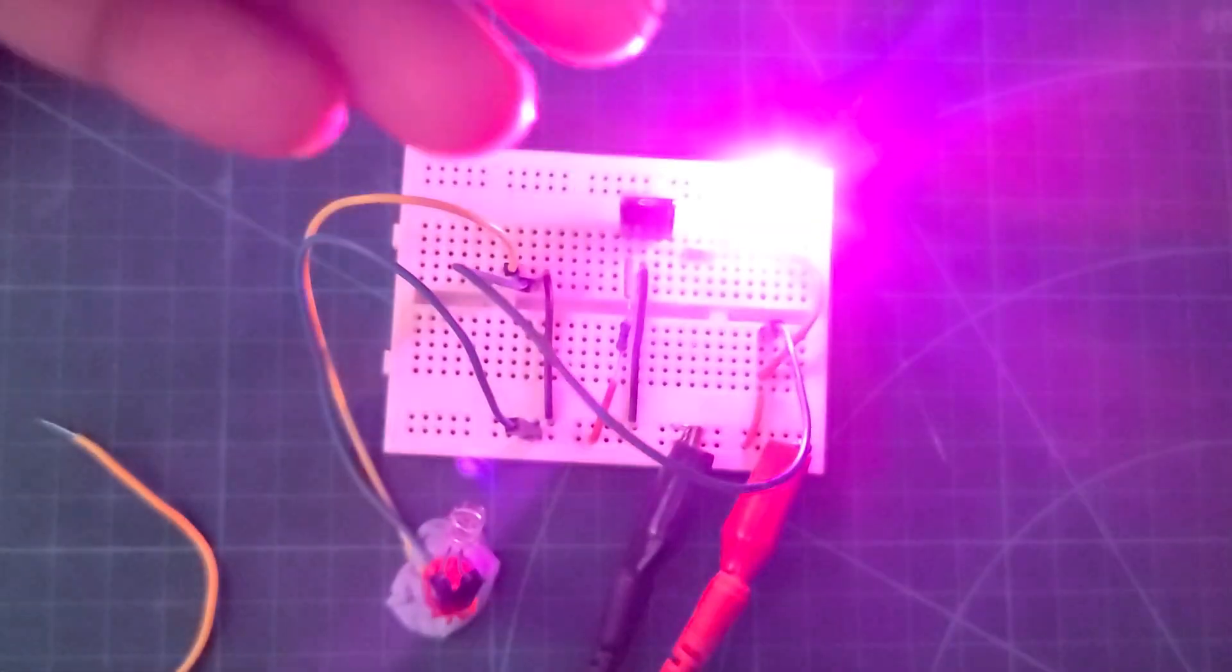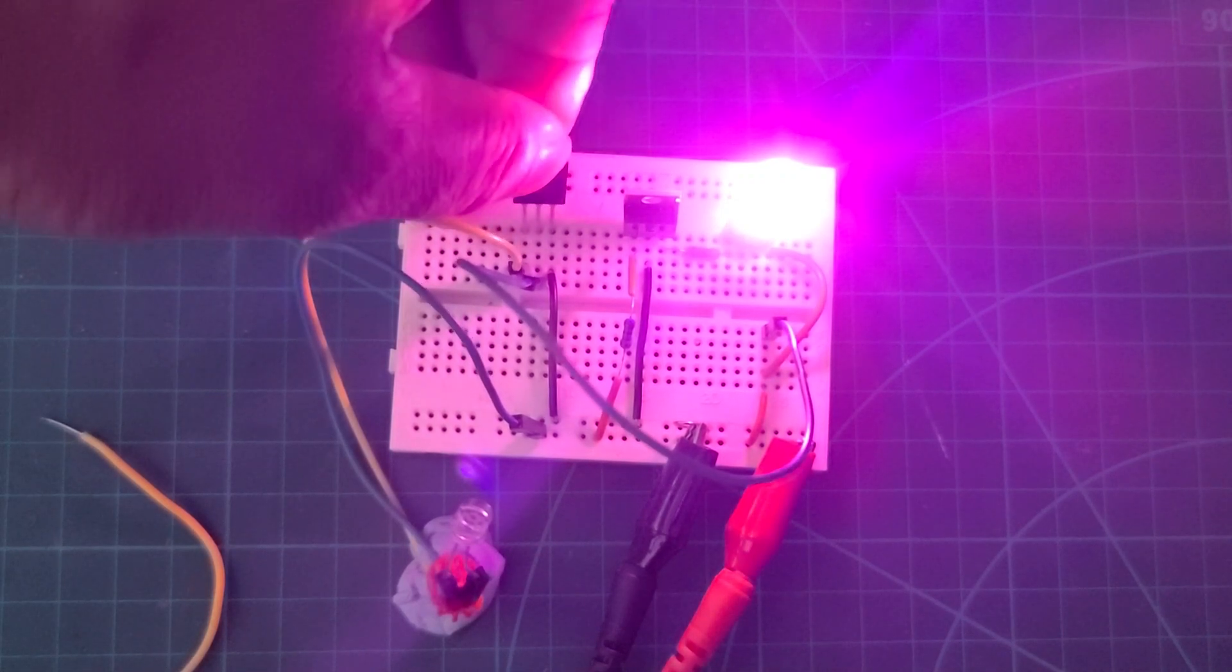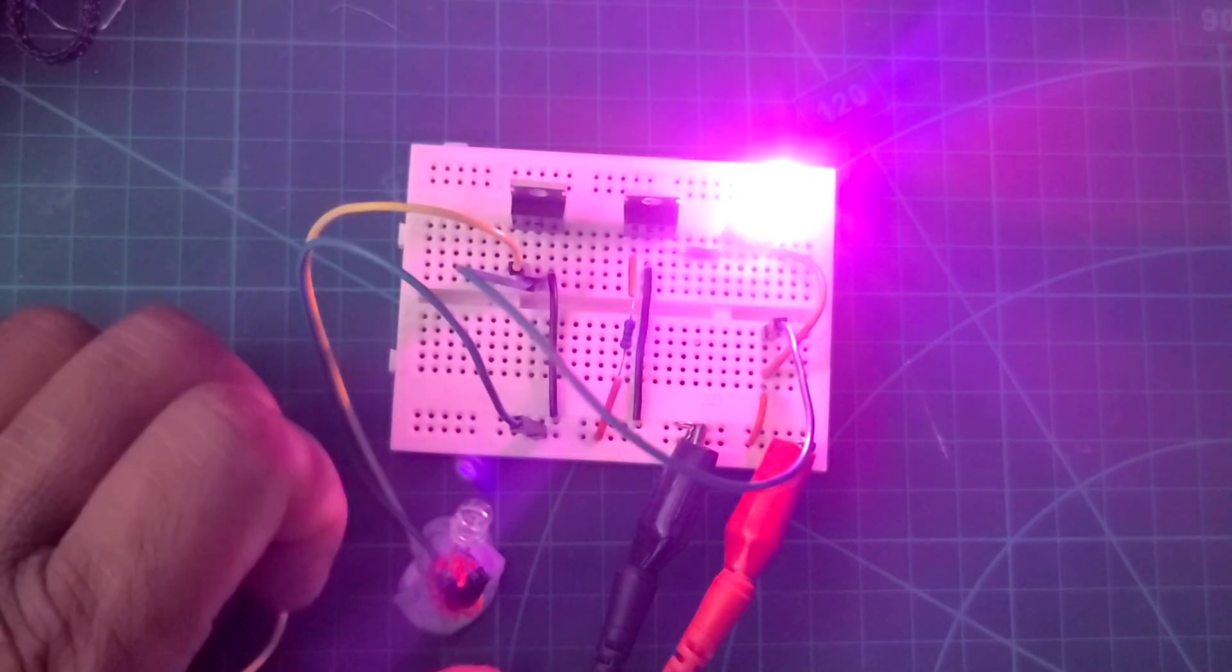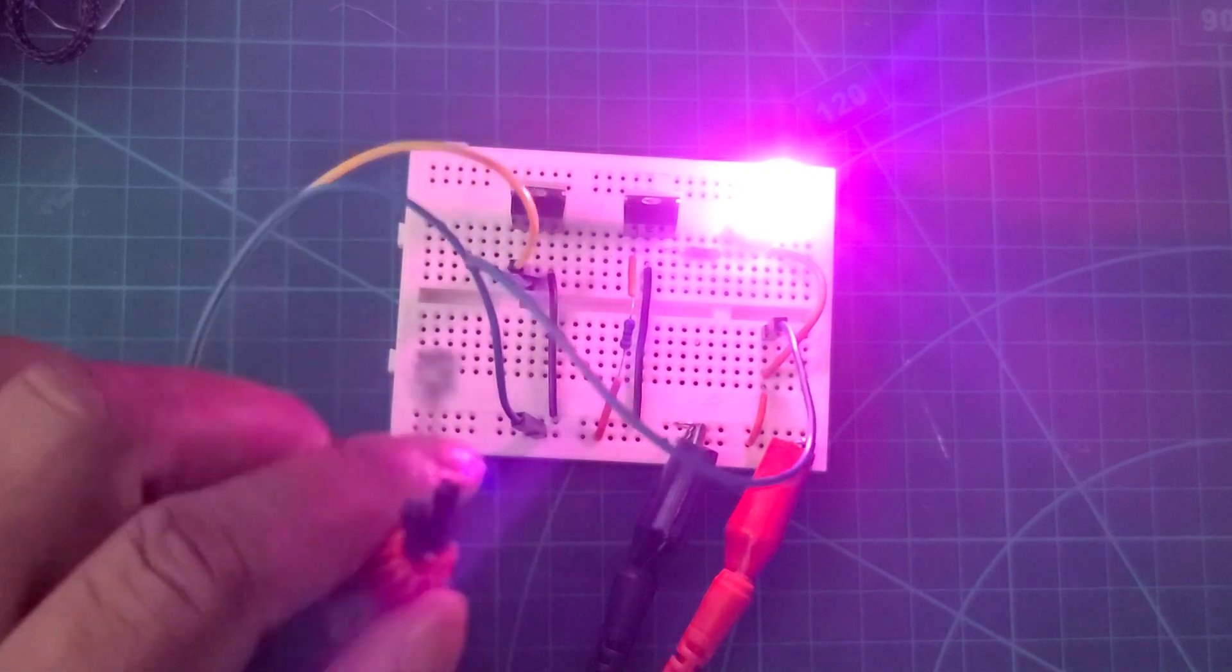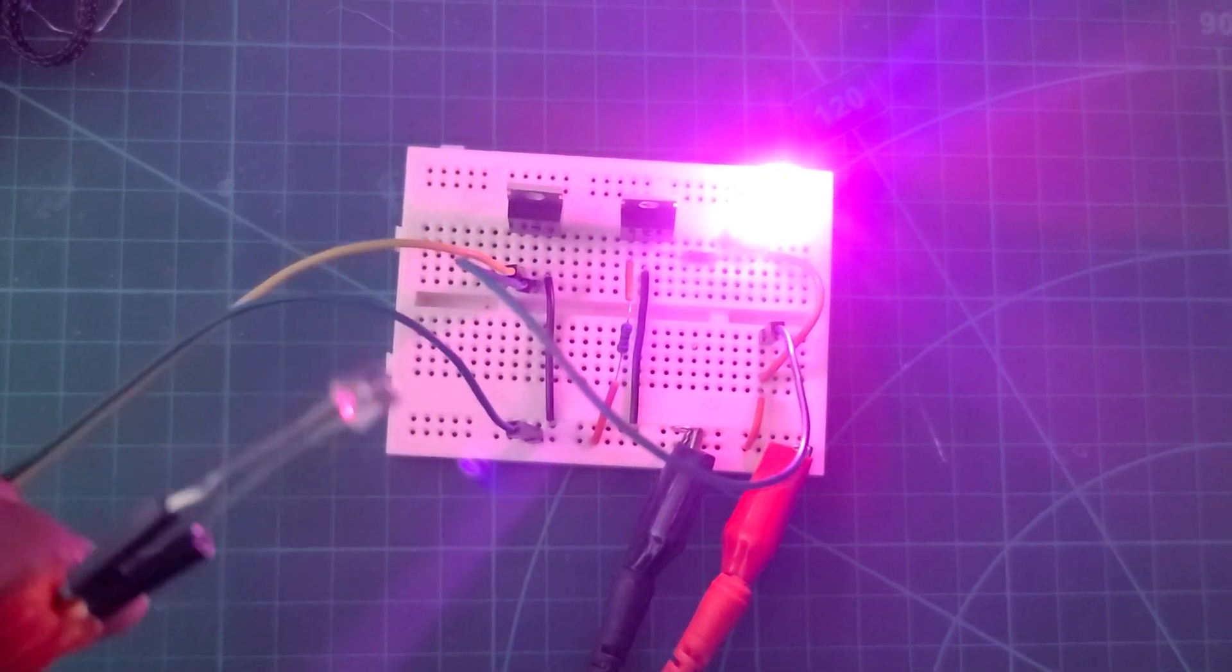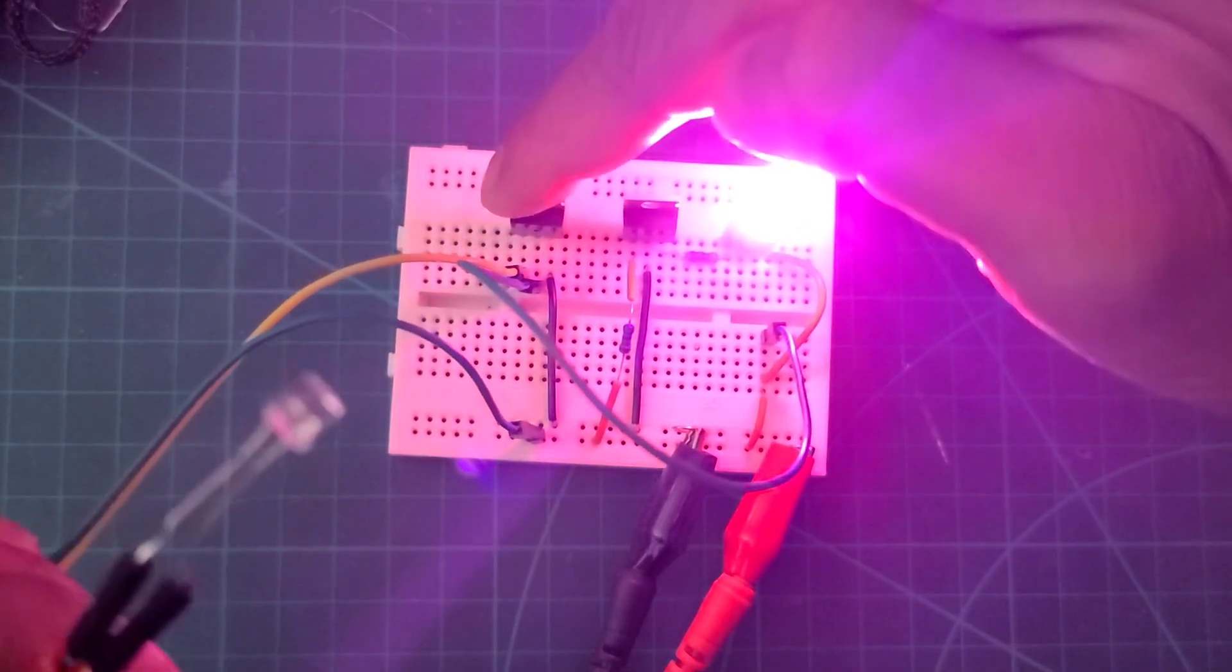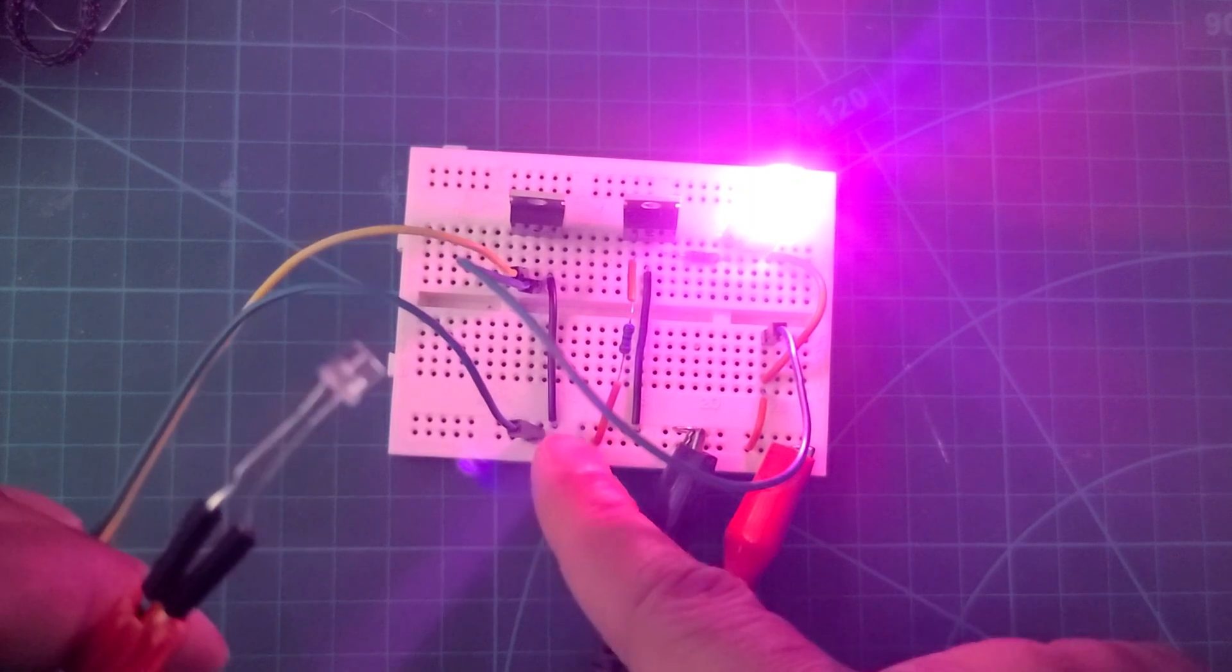We will inject some current to the base. In this case you can use a push button switch or any other connection method but in my case I am using this light dependent resistor. As you can see, the first pin, the base, is connected through the light dependent resistor to the plus volt.